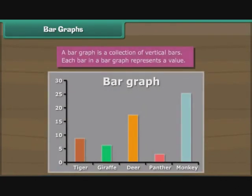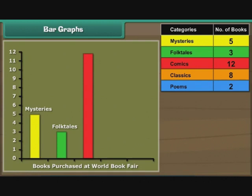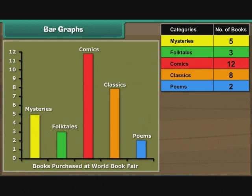A bar graph is a collection of vertical bars. Each bar in a bar graph represents a value. Let us now organize Ravi's data in the form of a bar graph. We first draw a bar 5 cm tall to represent mysteries. Then we draw a bar 3 cm tall to represent folktales. Next, we draw a bar 12 cm tall to represent comics. We now draw a bar 8 cm tall for classics. Last, we draw a bar 2 cm tall for poems. The bar graph is ready.